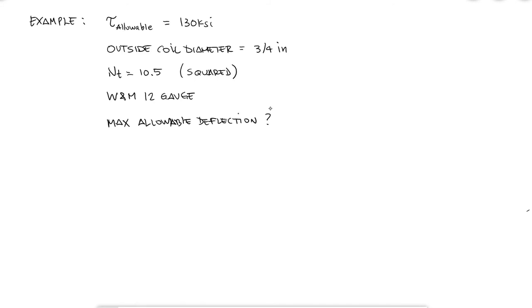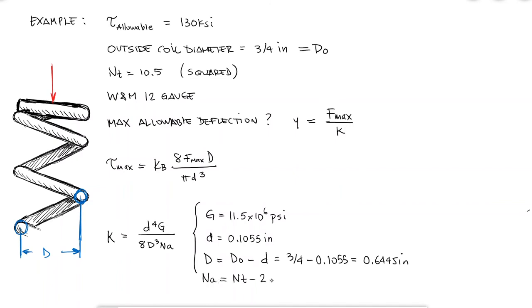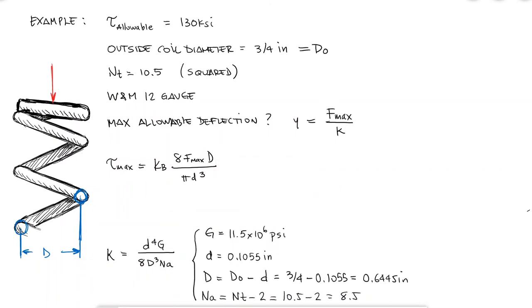To do this, we know that the maximum deflection will be given by the maximum force before the stress reaches the value of the maximum shearing stress given to us, and the spring rate or spring constant k. Starting with the spring constant, I can look up the 12 gauge steel wire online to find that the shear modulus G is 11.5 times 10 to the 6 psi and that the wire diameter for a 12 gauge is 0.1055. With this information, I can find the mean coil diameter capital D as the difference between the given outside coil diameter and the wire diameter, and finally, since we were told that the spring had squared ends, the number of active coils will be 2 fewer than the total number of coils. Substituting these values, I would find the spring constant of 78.3 pounds per inch.